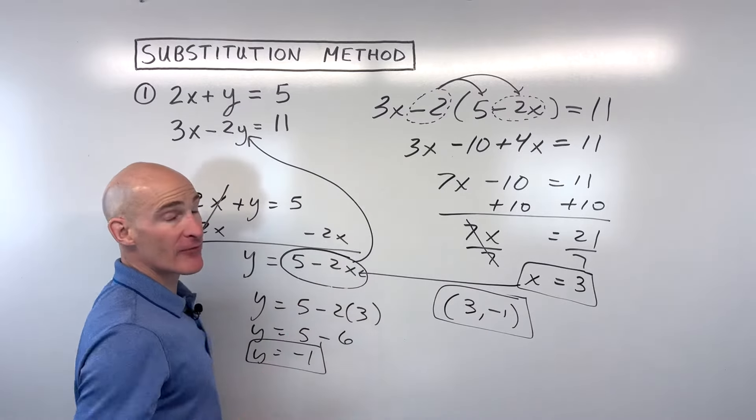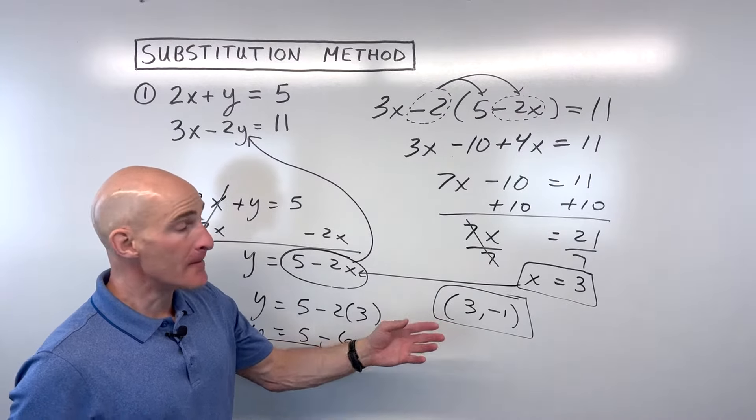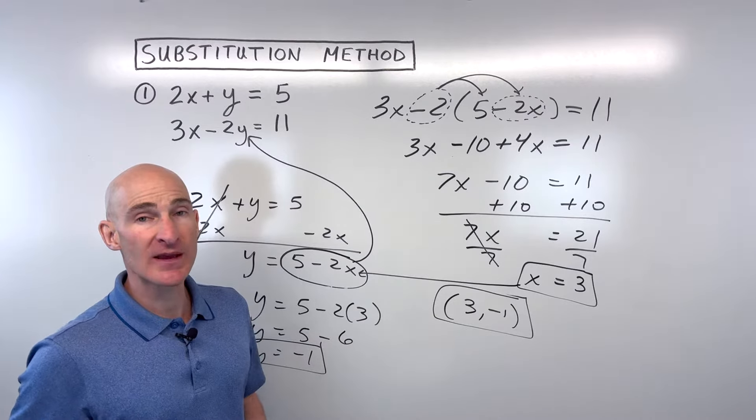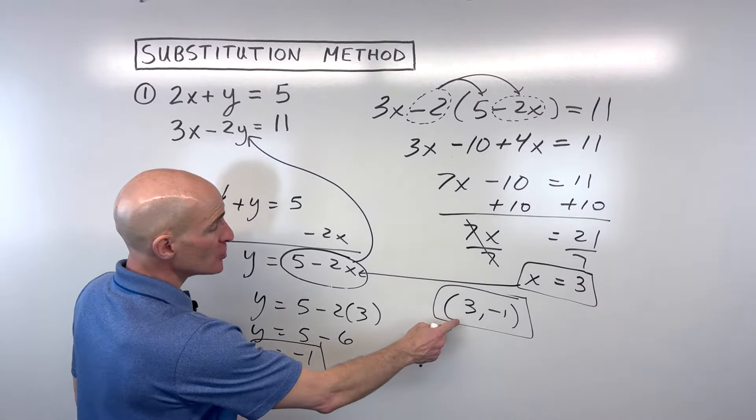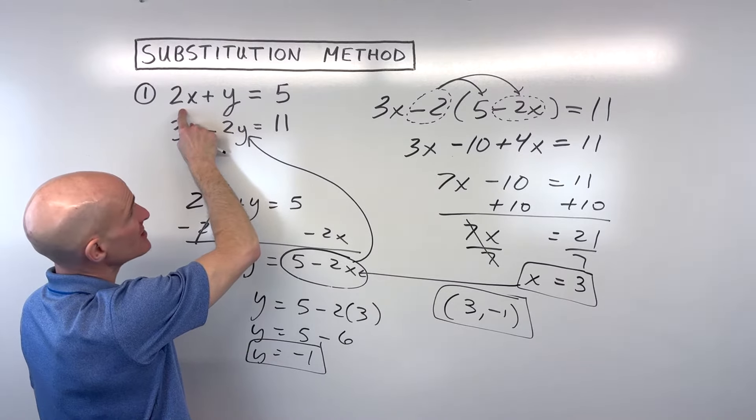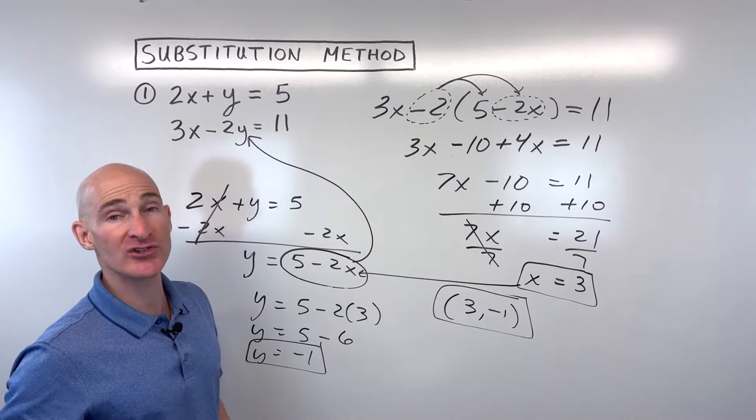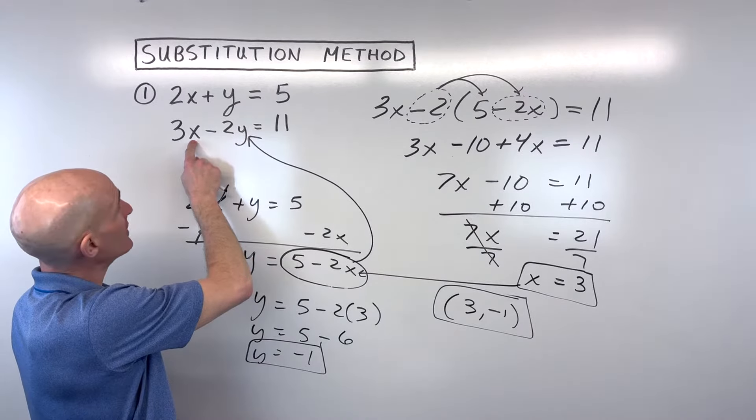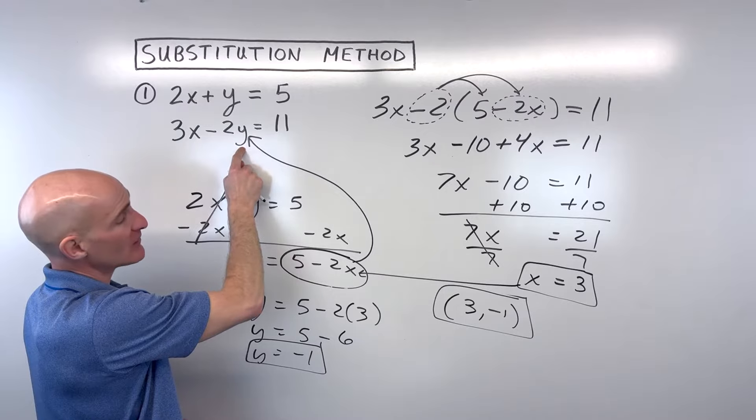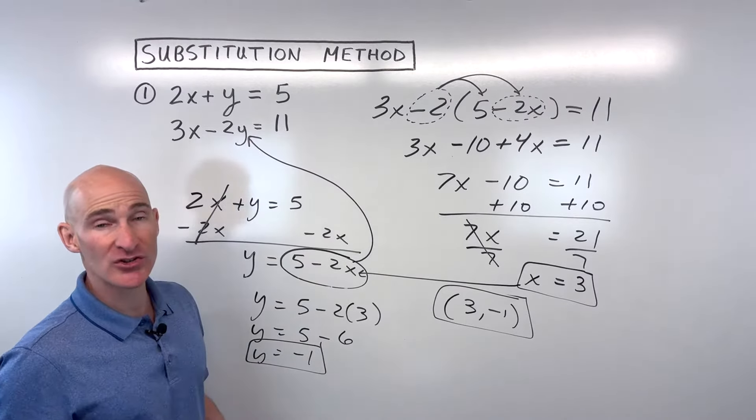So if we were to graph these two lines, that's the point of intersection where the two lines would cross. If you want to check your answer, just go ahead and plug 3 back in for x. We get 2 times 3 is 6, plus y, which is negative 1. That equals 5, so that makes that equation true. If we plug it in over here, we get 3 times 3 is 9. Negative 2 times negative 1 is positive 2. 9 plus 2 is 11. It makes that equation true. So you can see this is a good solution.